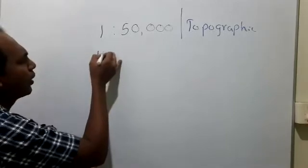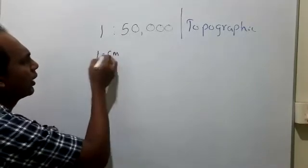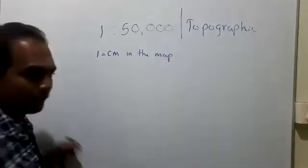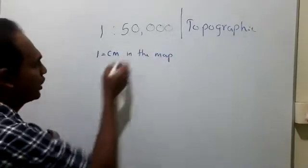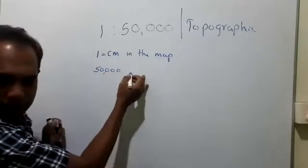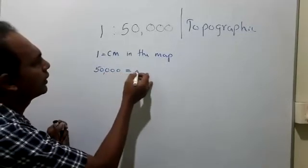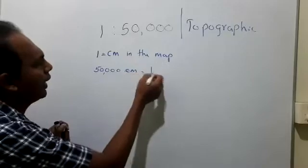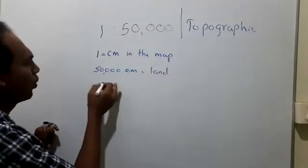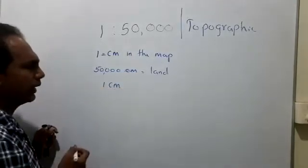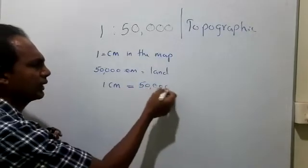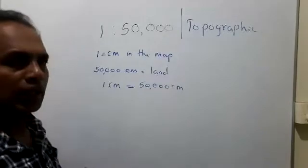What does '1' mean? 1 means one centimeter in the map. And what is 50,000? 50,000 centimeters in the land or the ground. It means one centimeter in the map equals 50,000 centimeters in the land.